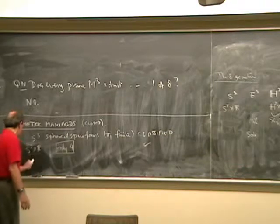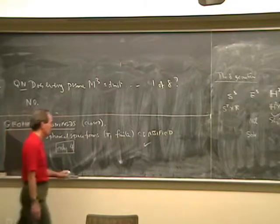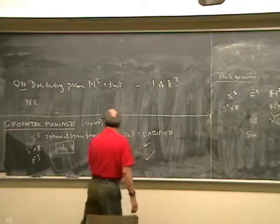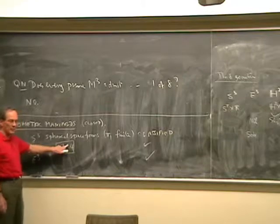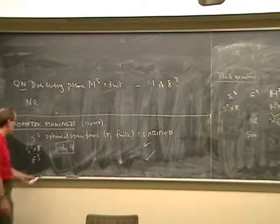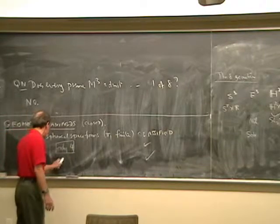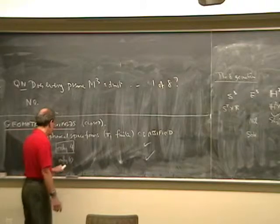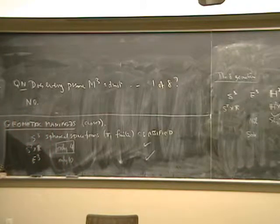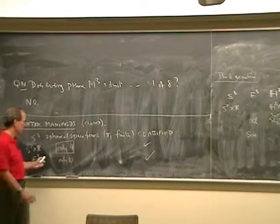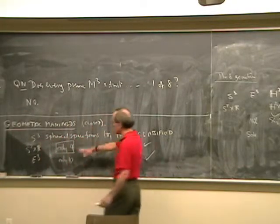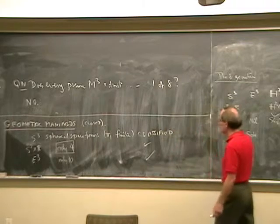What about E3? Well, they're also classified. And by the way, these are two orientable, two non-orientable, including non-orientable here. And E3 is also easier, they're only ten. You have ten closed, flat, three manifolds. Three torus, one of them, the others a bit less obvious. So these are classified. They're looking pretty good.